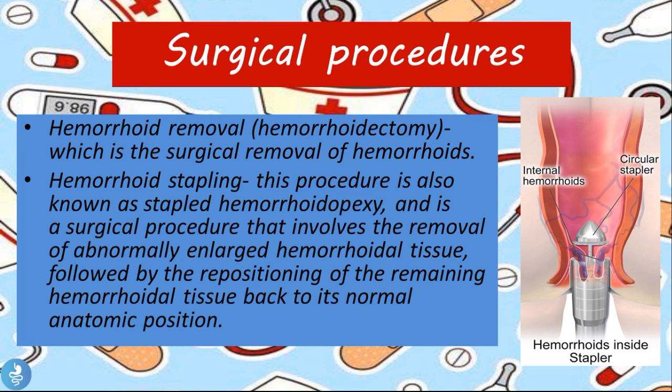Surgical procedures include a hemorrhoidectomy — the surgical removal of the hemorrhoid — and hemorrhoid stapling, also known as a stapled hemorrhoidopexy. This surgical procedure involves the removal of abnormally enlarged hemorrhoid tissue followed by the repositioning of the remaining hemorrhoidal tissue back into its normal anatomical position. A circular stapler is placed around the internal hemorrhoid, the stapler shuts, and it repositions the tissue back into its normal anatomic position.